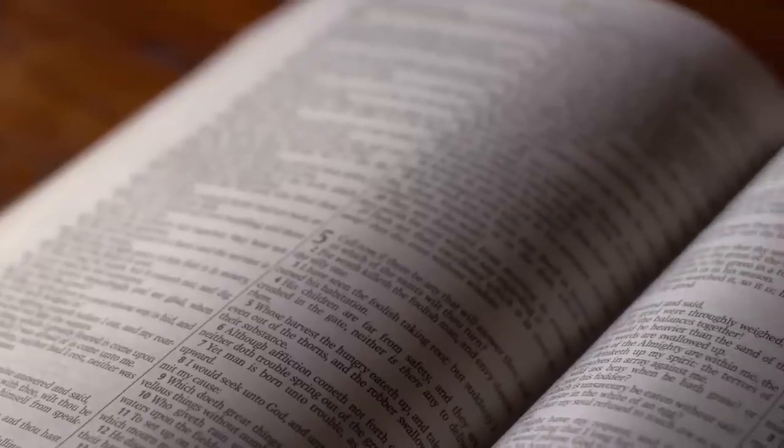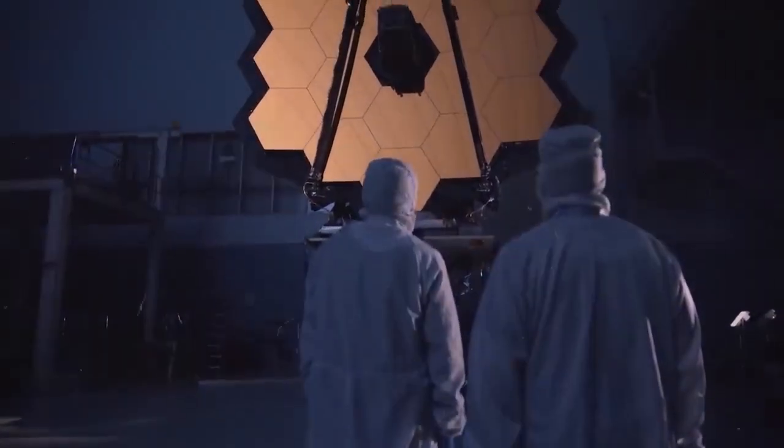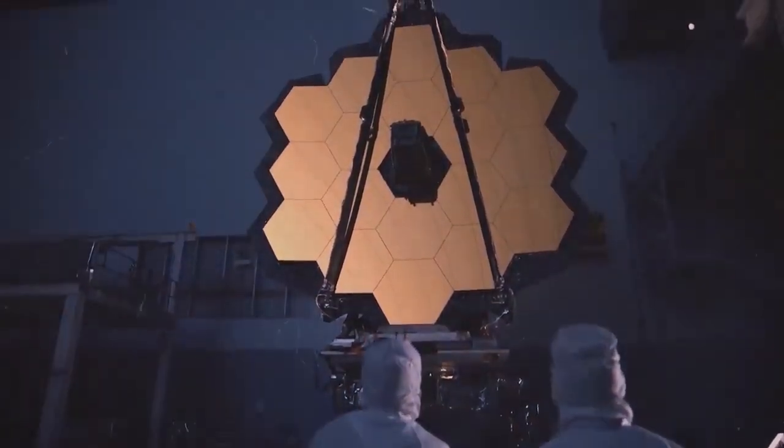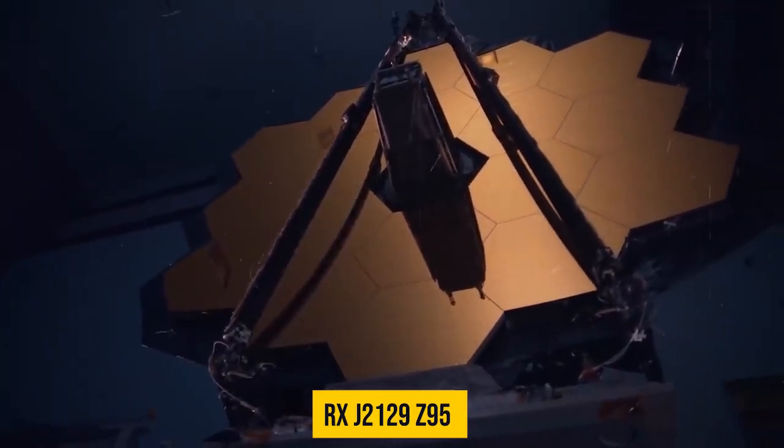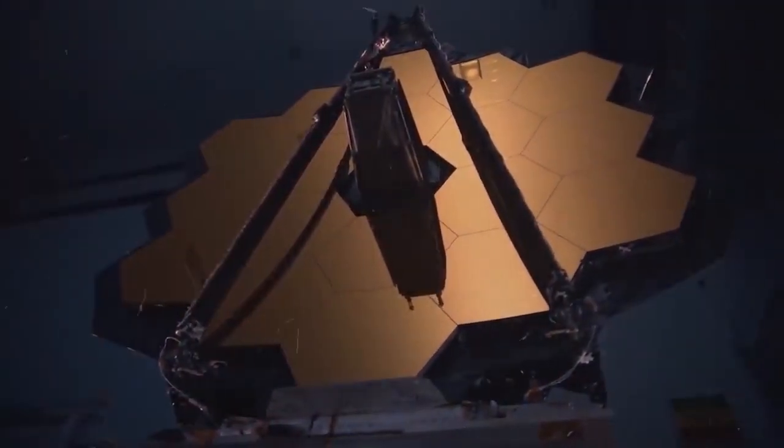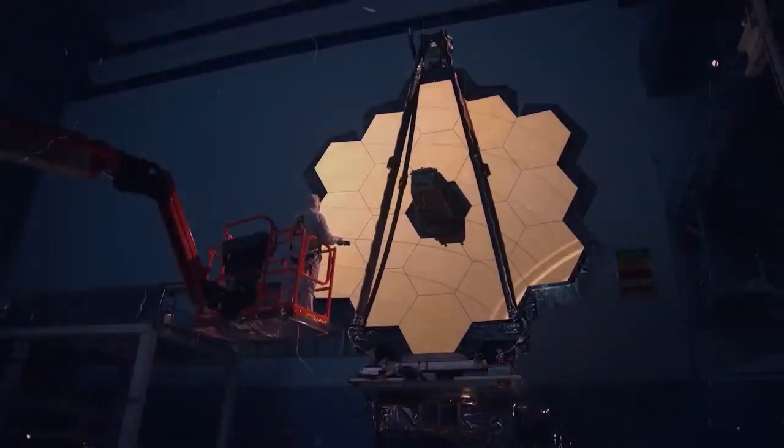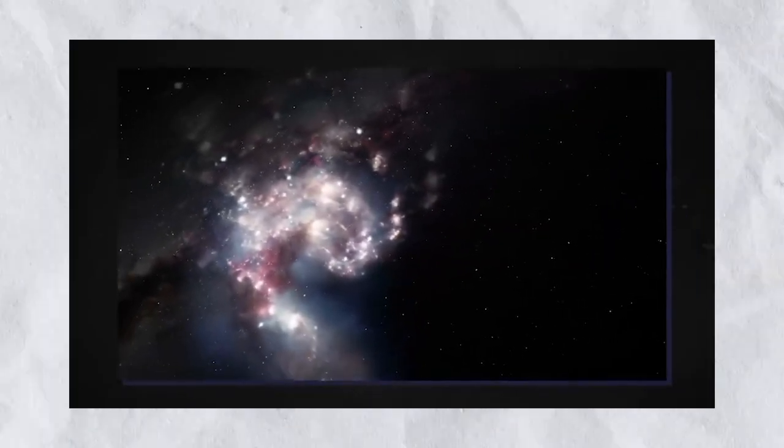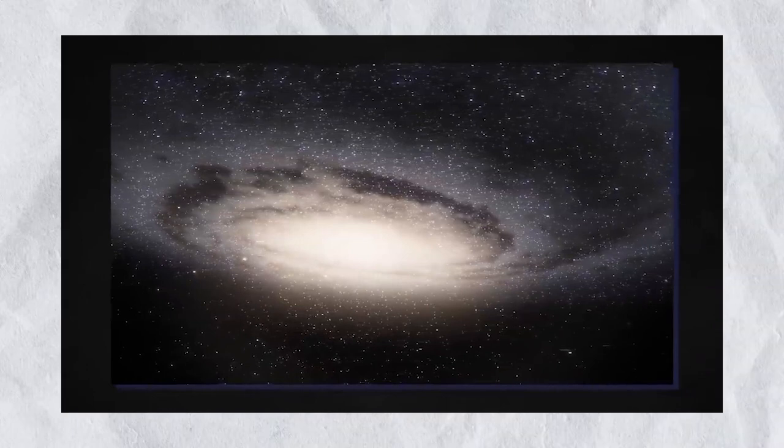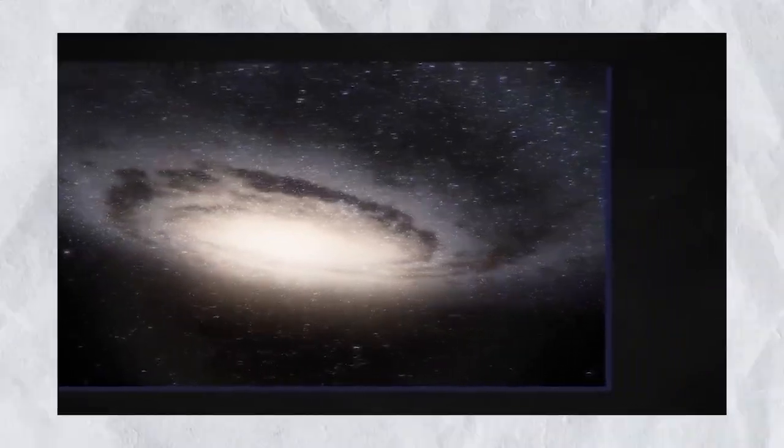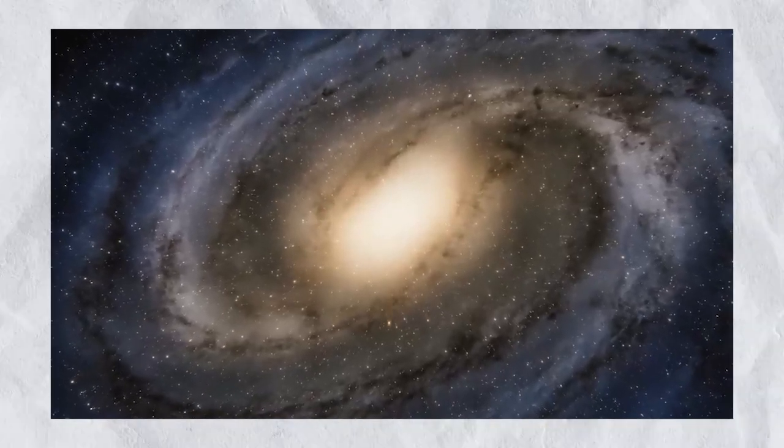The groundbreaking discovery made by the James Webb Space Telescope of the earliest proto-galaxy cluster and the galaxy Rx J2129-Z95 carries profound implications for cosmology. This section explores the far-reaching impact of this discovery, challenging existing theories and reshaping our understanding of the universe's development. The detection of a proto-galaxy cluster just 650 million years after the Big Bang challenges previous theories about the timeline and mechanisms of galaxy formation.